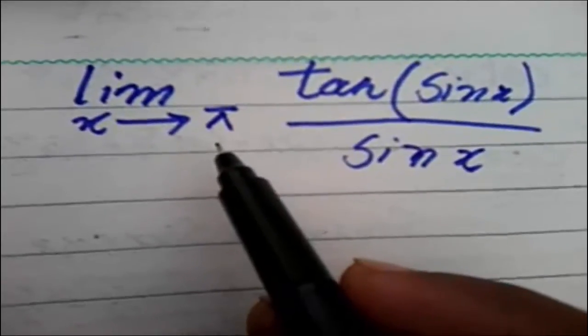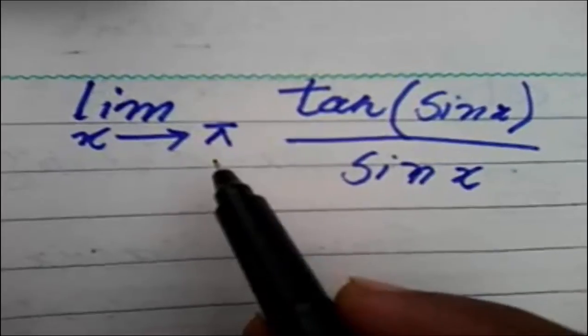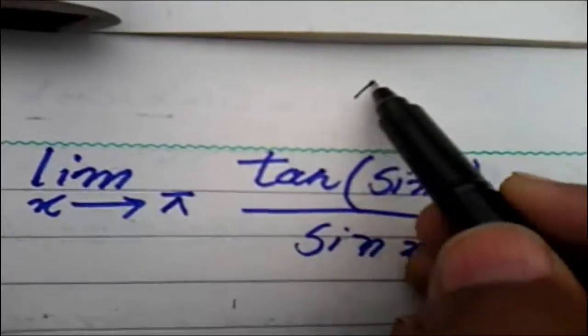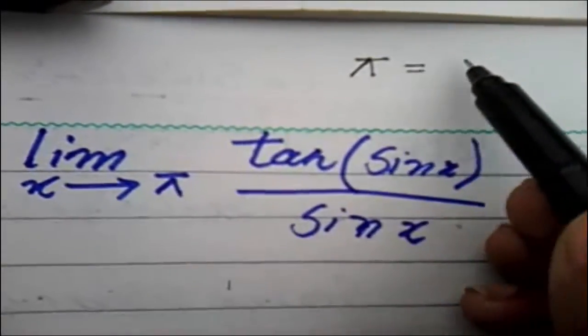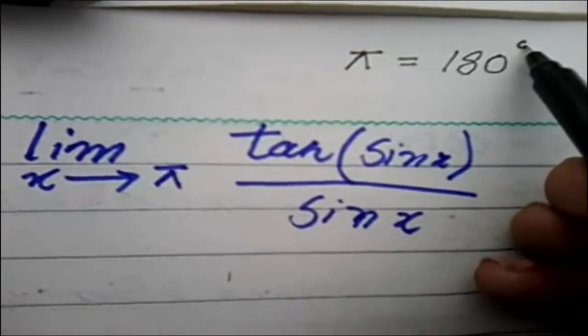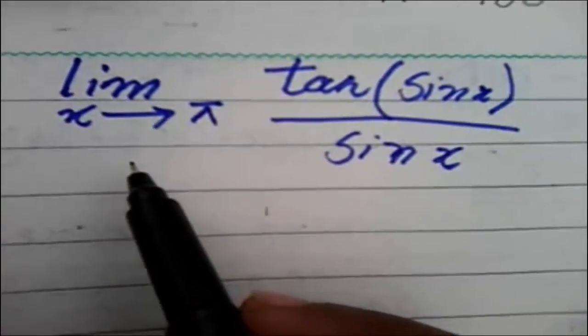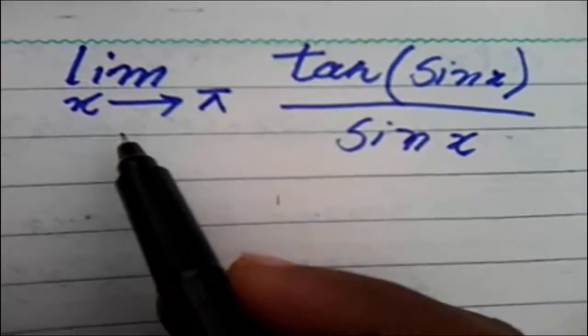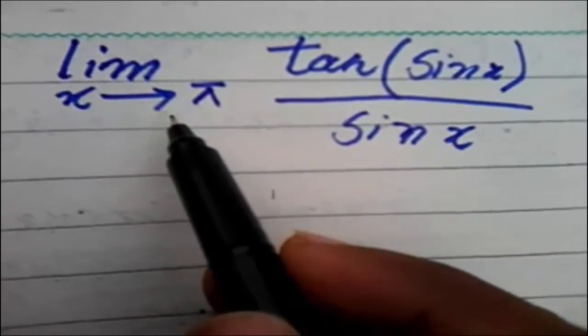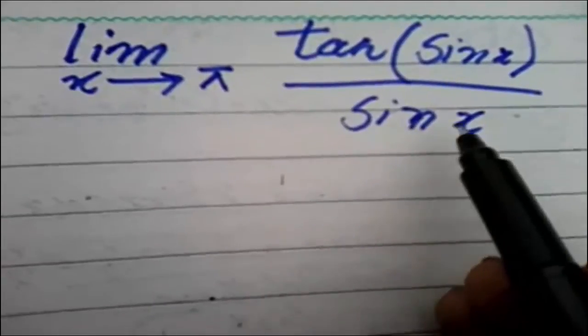In trigonometry we use π is equal to 180 degrees. π means 180 degrees, okay? π is equal to 180 degrees.